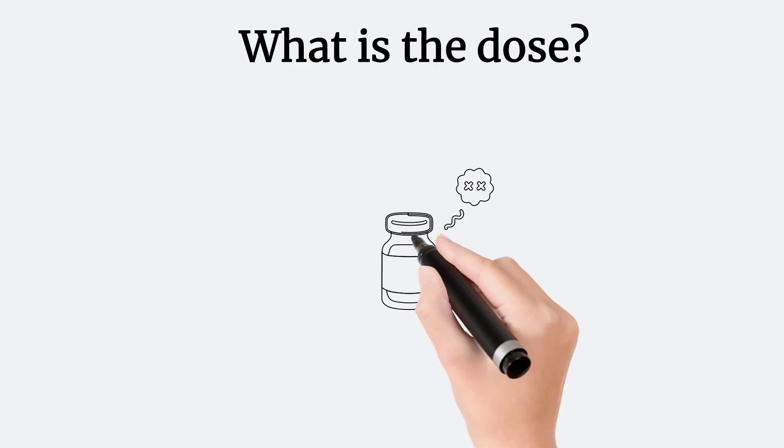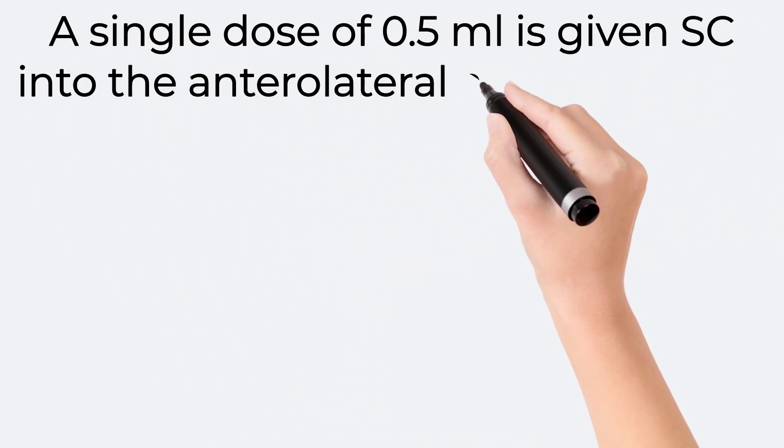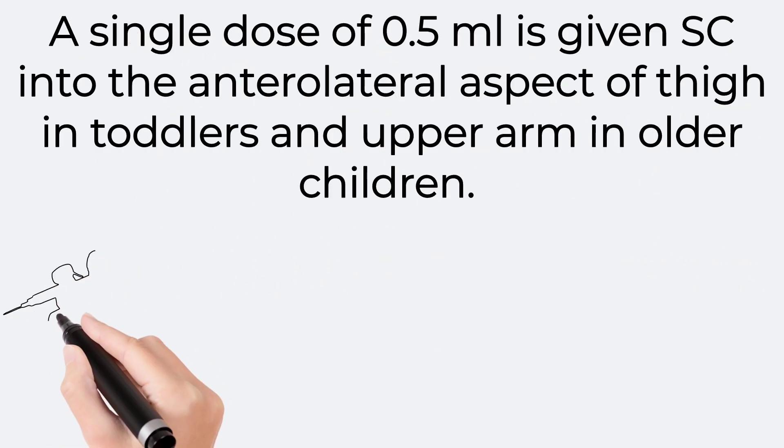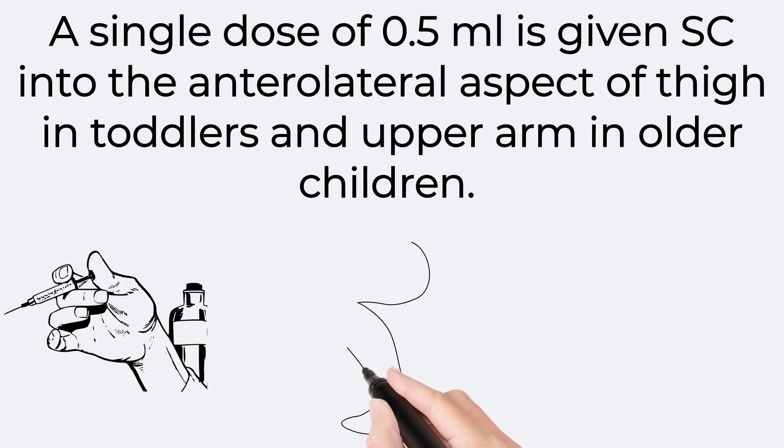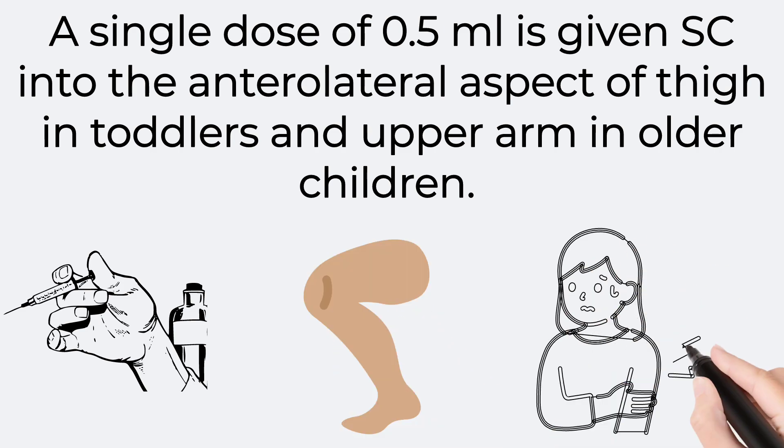What is the dose of MMR vaccine? A single dose of 0.5 ml is given subcutaneously into the anterolateral aspect of thigh in toddlers and upper arm in older children. As per the National Immunization Schedule, it should be given on the right upper arm.